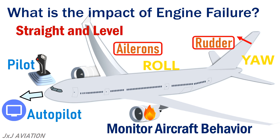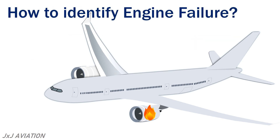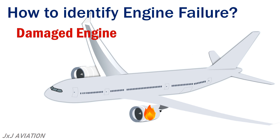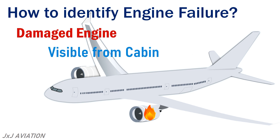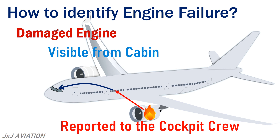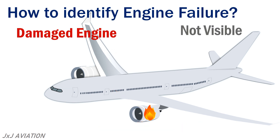But from the cockpit, how will the pilots identify a failure on an engine? An engine failure due to a foreign object or because of any damage within the engine will be visible from the cabin. Once damage is observed by any passenger or the cabin crew, it is immediately reported to the cockpit crew. But if the failure is not visible, an engine failure may be identified by different warnings that get triggered in the cockpit.